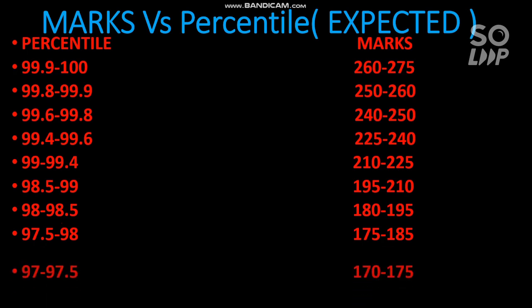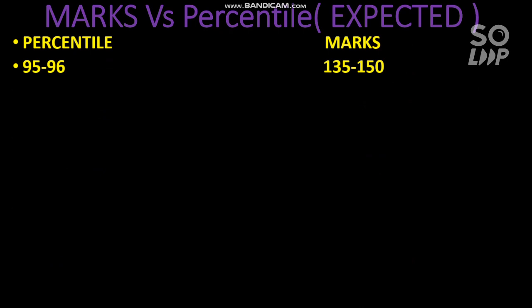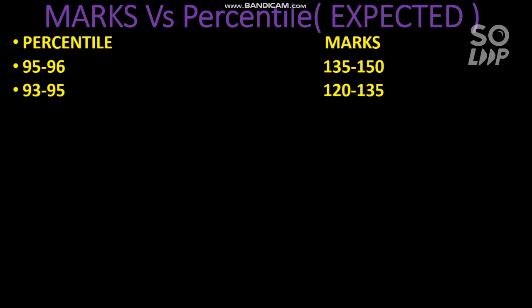For 97.5 to 98 percentile, your marks would be 175 to 185 — many students fall in this marks range so the gap between marks is very small. For 96 to 97 percentile, your marks should be 150 to 170. For 95 to 96 percentile, you need at least 135 to 150 marks. For 93 to 95 percentile, you need 120 to 135 marks. If the paper is hard, you can get those percentiles with 5 to 10 marks less.